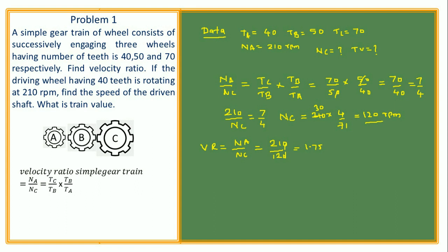The velocity ratio is NA by NC, which is 210 divided by 120, coming out to be 1.75. So the gear ratio is 7 is to 4. The train value is 1 over the velocity ratio, that is 1 by 1.75, which comes out to be 0.57. So this is the answer.